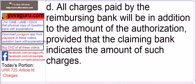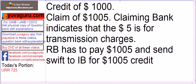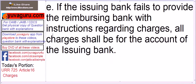Clause D: all charges paid by the reimbursing bank will be in addition to the amount of the authorization, provided that the claiming bank indicates the amount of such charges. For example, if the credit is for $1,000 and the claiming bank's claim is for $1,005, indicating that $5 is for transmission charges, then the reimbursing bank must pay $1,005 — not just $1,000 — and send a SWIFT to the issuing bank for $1,005 to credit its account.